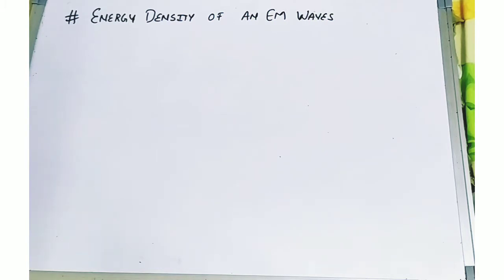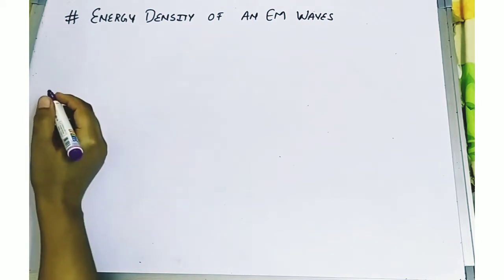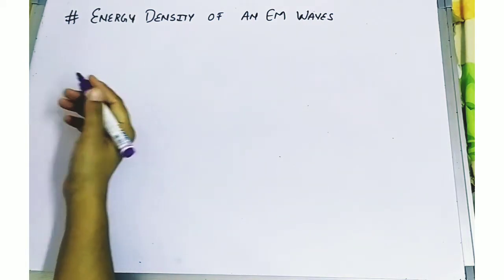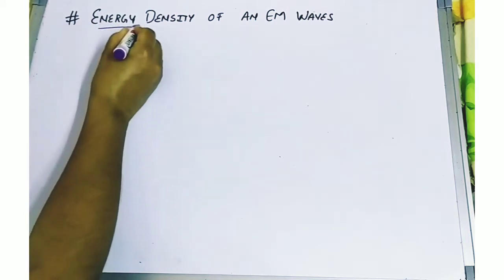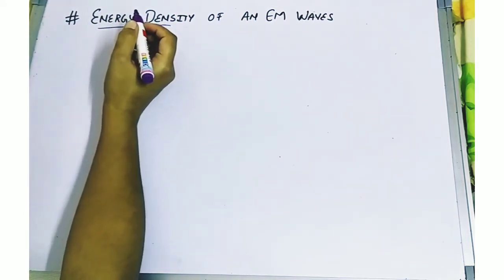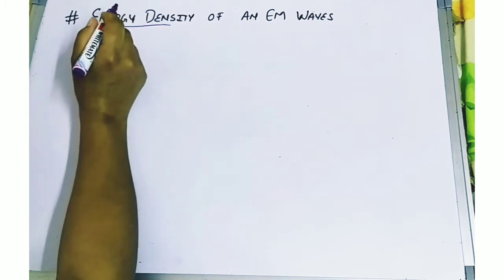Hello students. In this part we are going to learn about the energy density of EM waves. As we already know, whenever EM waves travel in space they possess energy, which they share as electrical energy in an electric field and a magnetic field. This is called energy density. Energy density is defined as the energy per unit volume of the space through which the waves travel.